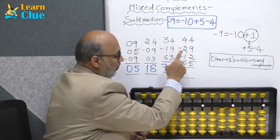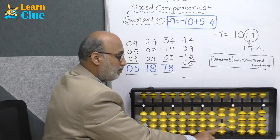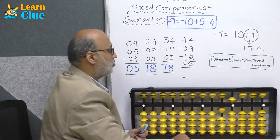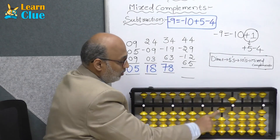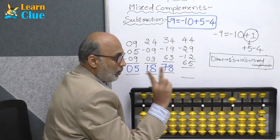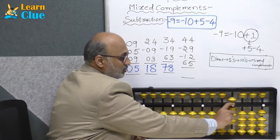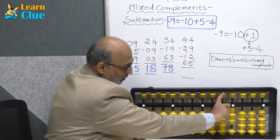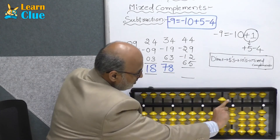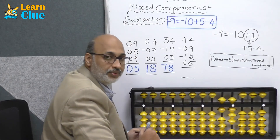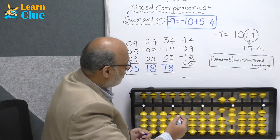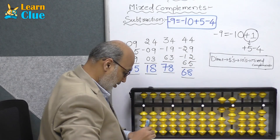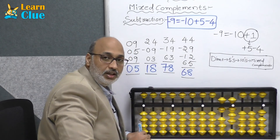Next problem: 44 minus 29 — minus 20 minus 9. Minus 9 is nothing but minus 10 plus 5 minus 4. Now they are asking minus 12: minus 10 minus 2. Minus 2 applies as plus 3 minus 5. Now they are asking plus 65: plus 60 plus 5, which is direct. The answer is 68. So like that you have to practice the problems.